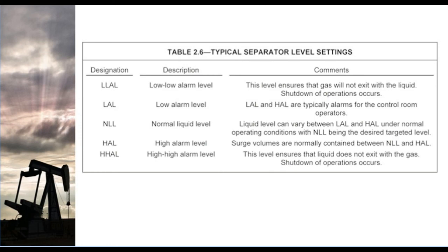It is a low alarm level. If the production is low, it triggers a low alarm level. This is the NLL — normal liquid level. This is the high alarm level for operation. The high alarm level is high, and this is HHEAL — High-High Emergency Alarm Level. This is the liquid level protection system for gas.